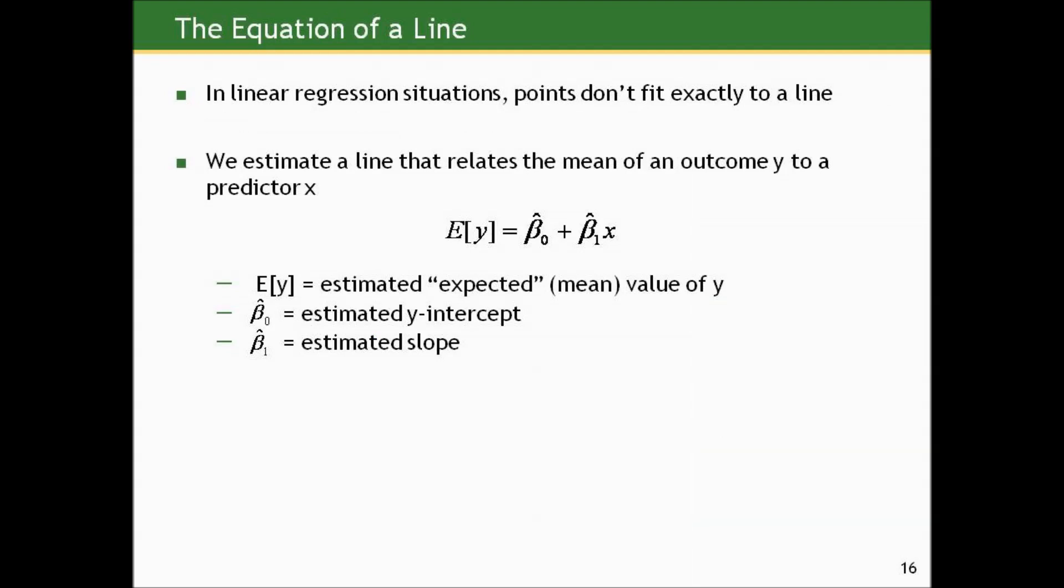In linear regression situations, we're not going to have points that fit exactly on a line. What we do, given a cloud of points, is estimate a line that relates the mean of some outcome y to a predictor x. The line we estimate is the estimated mean of some quantity as a function of predictor x: E(y) equals β0_hat plus β1_hat times x.